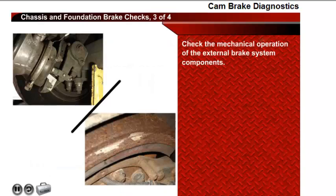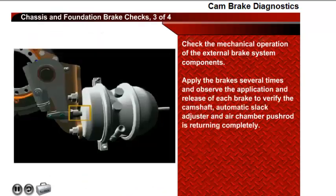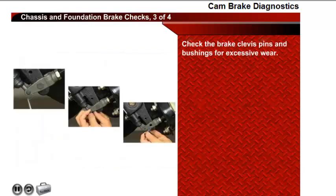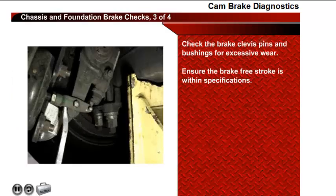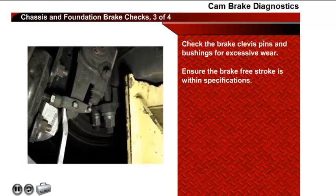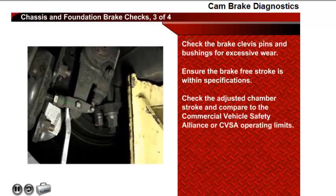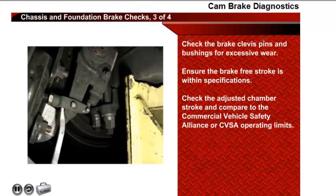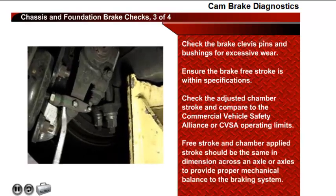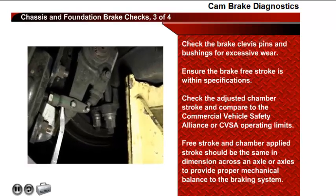Next, check the mechanical operation of the external brake system components. Apply the brakes several times and observe the application and release of each brake to verify the camshaft, automatic slack adjuster, and air chamber pushrod is returning completely. Observe the brake chamber bracket, camshaft tube, and brake spider for excessive deflection, looseness, or cracks. Check the brake clevis pins and bushings for excessive wear. Ensure the brake freestroke is within specifications — too little freestroke can cause brake linings to drag, and too much freestroke is an indication the brake is not adjusting correctly. Check the adjusted chamber stroke and compare to the Commercial Vehicle Safety Alliance (CVSA) operating limits. Free stroke and chamber applied stroke should be the same dimension across an axle to provide proper mechanical balance to the braking system.